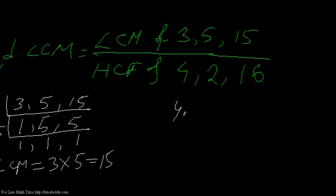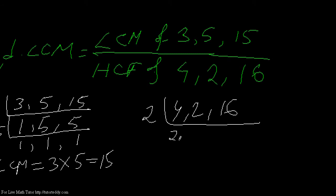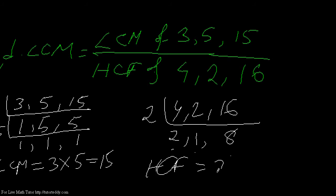Now for the HCF of the denominators 4, 2, and 16: all three numbers are divisible by a common factor, so let me divide by 2. I get 2, 1, and 8. After that, these two numbers are divisible by 2 but not 1, so I don't need to divide any further. The HCF of these three numbers is 2.